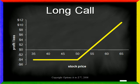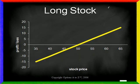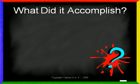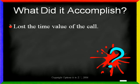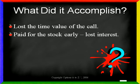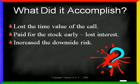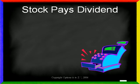Your profit and loss profile will change from the hockey-stick shape to a straight line, which shows that you still have unlimited profit potential if the stock rises, just as with a long call. However, unlike the long call, you are now exposed to unlimited losses if the stock price should fall. So what did early exercise accomplish? It accomplishes nothing to your advantage. By exercising the call, you lost the time value of the call. Second, you paid for the stock earlier than necessary, and lost out on some interest that could have been earned on that cash. Finally, you increased the downside risk. Remember, you can always elect to exercise the call option at expiration and take delivery of the stock for the same fixed price — so why exercise it early? If the stock price plummets, you'll be glad you waited.